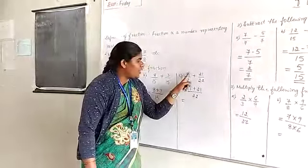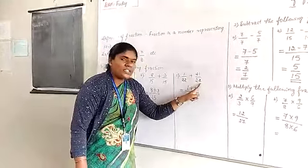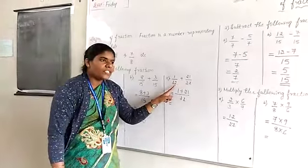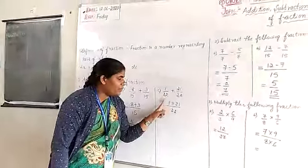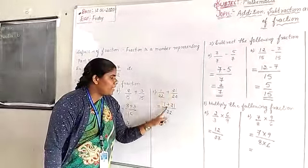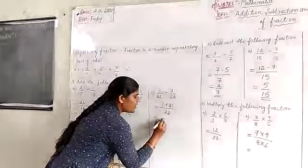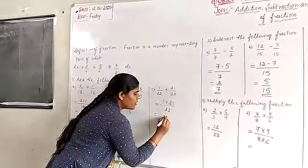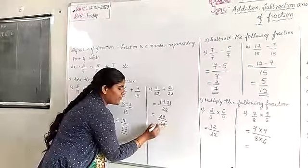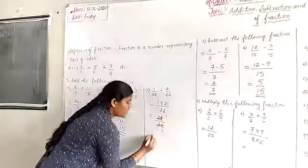Next problem: 1 by 22 plus 21 by 22. Here also observe carefully the denominator value. Same is there, 22 as is. You add only numerators: 1 plus 21. How much? 21 plus 1 means 22 divided by 22. How many times? 22 ones are 22, how much? Answer, final answer is 1.